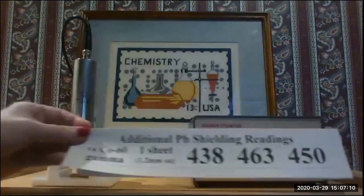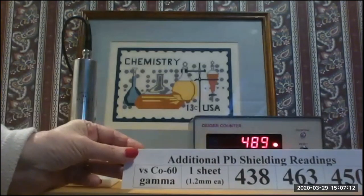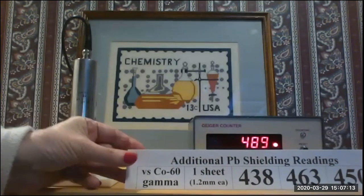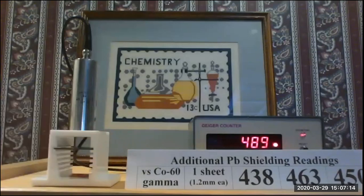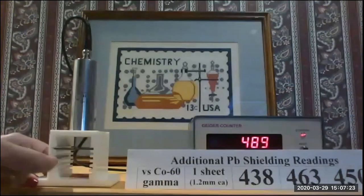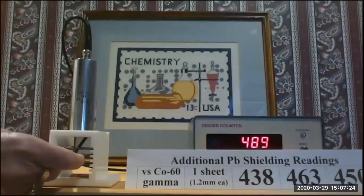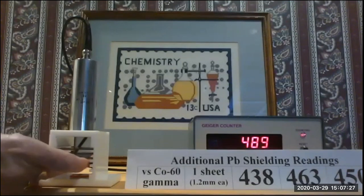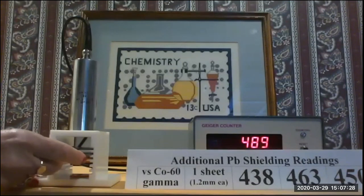If we were to do it three more times, here are three more values that we would get. You'd want to do at least five readings for each set of conditions. In the interest of time, I'm doing two live and three ahead of time, which I'm giving you the values for.